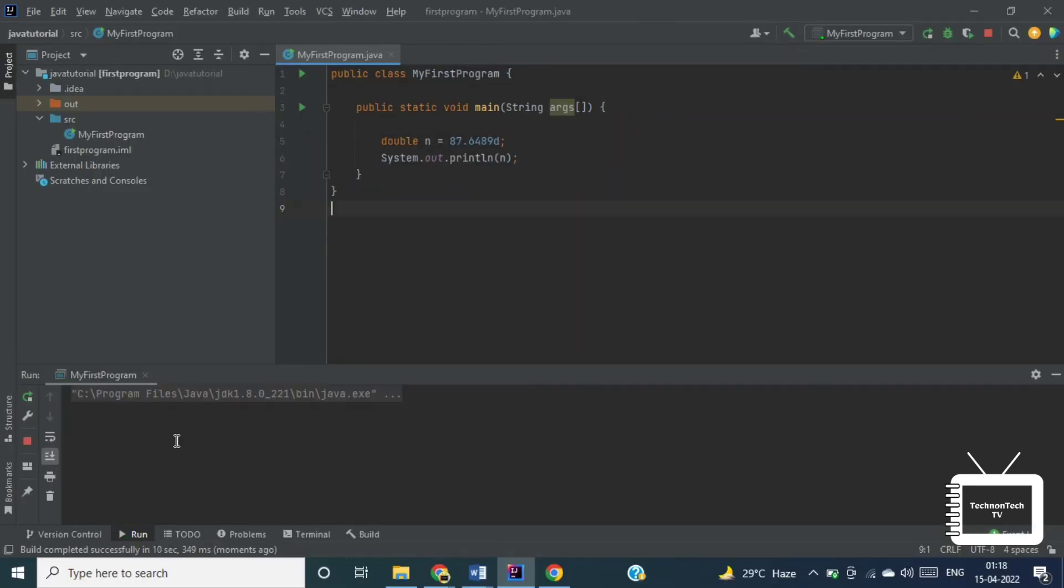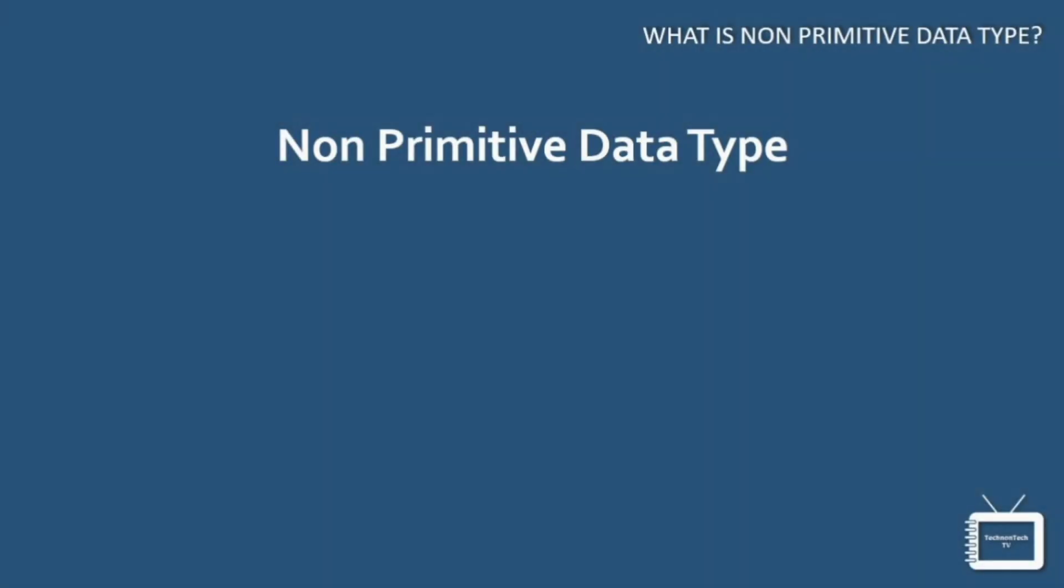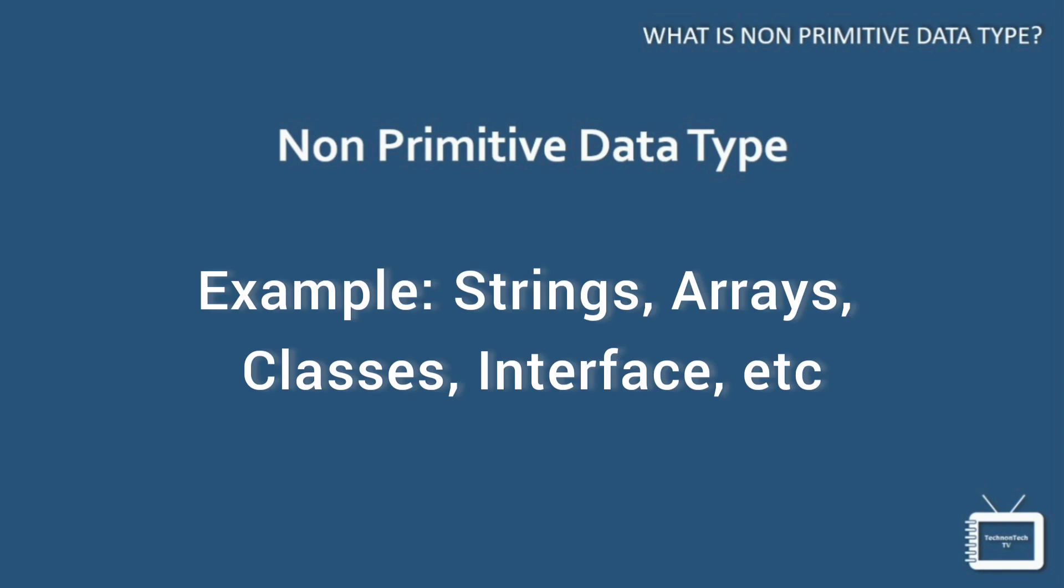So here we can see the output. So that was all about primitive data types. And non-primitive data types refer to objects and hence they are called reference types. Examples of non-primitive types include strings, arrays, classes, interfaces etc. So we'll talk about reference types in our upcoming tutorials.